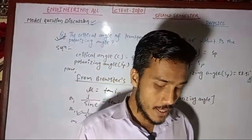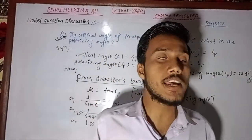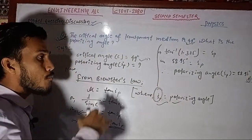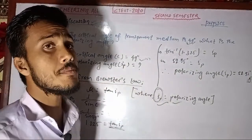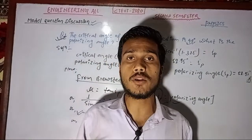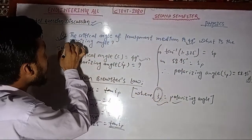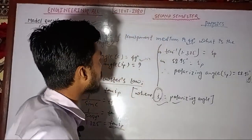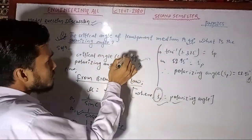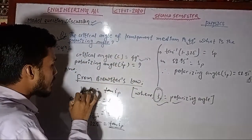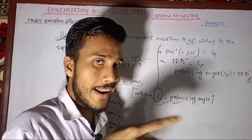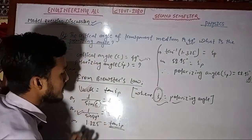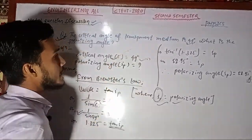The answer is in degrees. This problem was nice. Whether the critical angle is 49 degrees or 45 degrees, the method is the same. The polarizing angle exists in a given medium with refractive index mu, and the critical angle C relates to it.